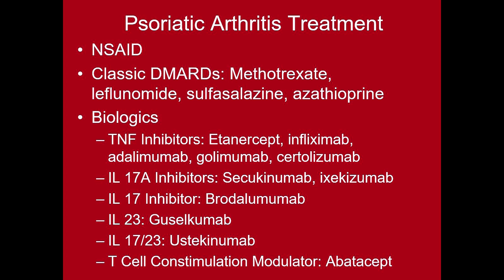The IL-17A inhibitors Secukinumab and Ixekizumab have been shown to be helpful in the treatment of psoriasis and psoriatic arthritis. The IL-17A inhibitor Brodalumab has been shown to be helpful in psoriasis but not psoriatic arthritis; one challenge with this medicine is that it can cause suicidal ideation. With respect to IL-23, Guselkumab or Tremfya has been useful. For IL-17/23, Ustekinumab or Stelara has been helpful. There is also a T-cell co-stimulation modulator called Abatacept or Orencia, initially used for rheumatoid arthritis but found helpful in psoriatic arthritis as well.